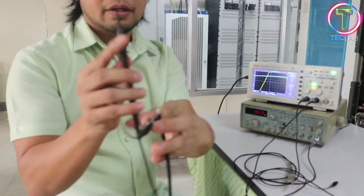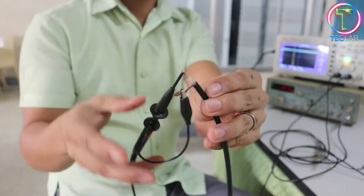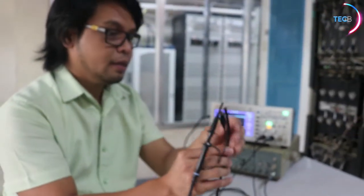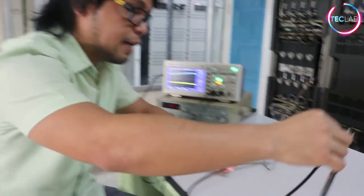So now we're going to connect the second channel of our oscilloscope to your ground and to your center conductor. So afterwards, we're going to put it here on the side.